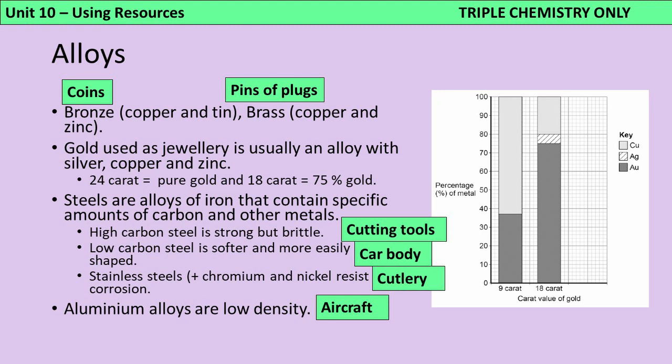Linked to corrosion is the second topic: alloys. Alloys are mixtures of metals that are harder than pure metals due to the disruption of the regular rows of positive ions. For Unit 10, you need to know specific examples and their uses. Bronze is copper mixed with tin, used to make coins. Brass is copper mixed with zinc, used for pins in plugs because it's harder than copper. Gold in jewellery is often alloyed because pure gold is very soft. Pure gold is 24 karat; 18 karat gold is 75% gold, with the rest being silver, copper, or zinc.